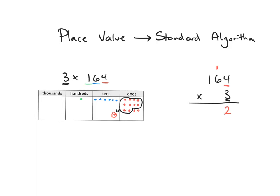The next thing I'm going to do on the place value chart is multiply 3 times the 6 tens — so I'm going to make three copies of 6 tens. I'm going to count how many 10s I have in total. Three groups of 6 tens is 18, plus the one 10 I have right here that I regrouped previously — that's 19 tens. I'm going to try to regroup all these tens and see how many I have left. I have enough for 10 tens to make 1 hundred, so I'm going to go ahead and do that.